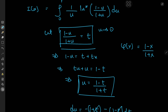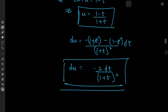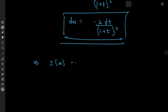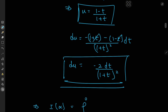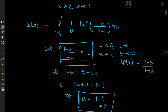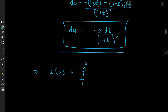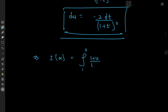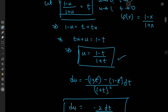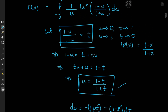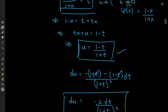As for the limits of integration: as u approaches 0, we have t approaching 1, and as u approaches 1, we have t approaching 0. So the limits are just switched up, implying that the integral I(α) equals the integral from 1 to 0. We have 1 over u, and we know how to express u in terms of t, so that means we have (1 plus t) divided by (1 minus t). We have log to the alpha of t, and the differential element is of course negative 2.